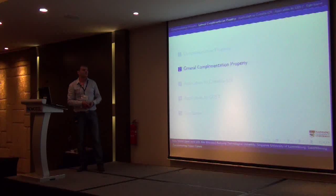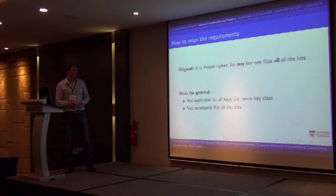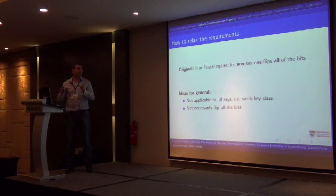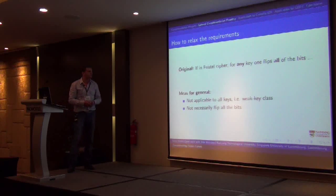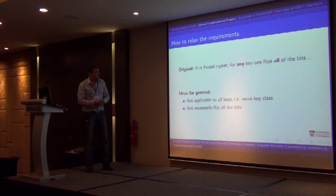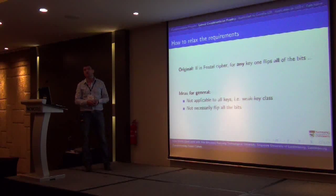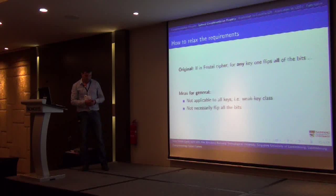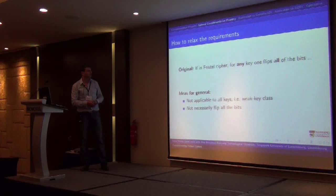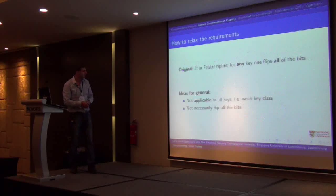Let's try to generalize this property. The original property says that if you have a Feistel cipher, you take any key, flip all the bits of the key and the plaintext, and you produce a complemented ciphertext. The ideas for generalization are: first, maybe this property doesn't have to work for all keys — in other words, we can produce a weak key class. Second, maybe we don't have to flip all the bits; we don't have to introduce difference 1-1-1 in the whole plaintext and whole key. Based on these two facts, we have produced another complementation property, which we call the general complementation property.